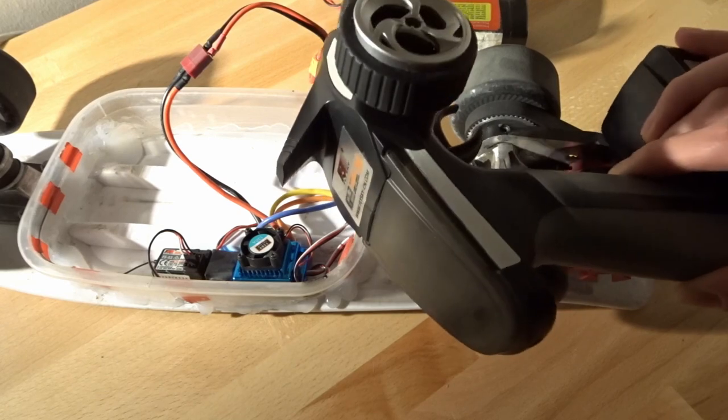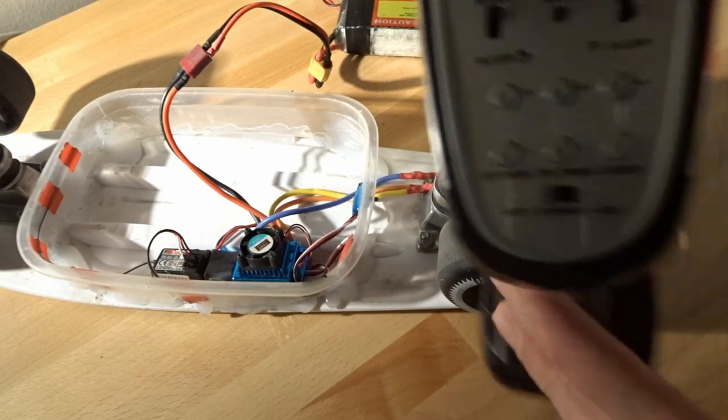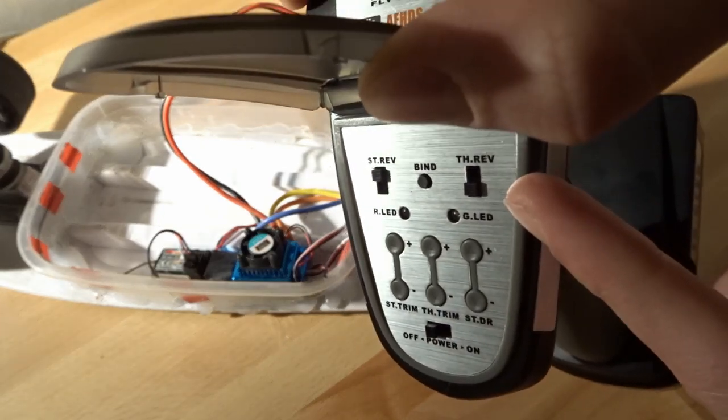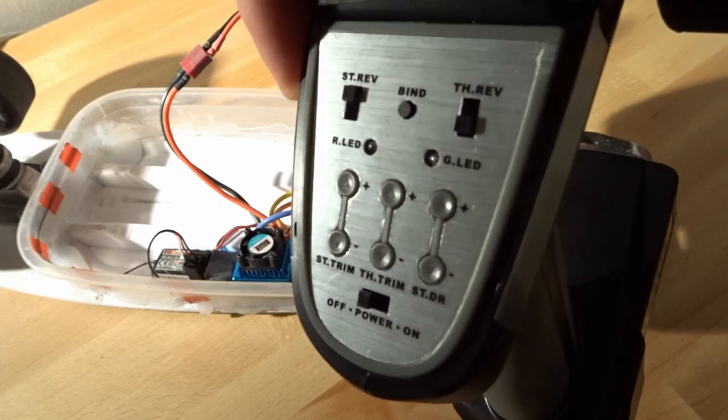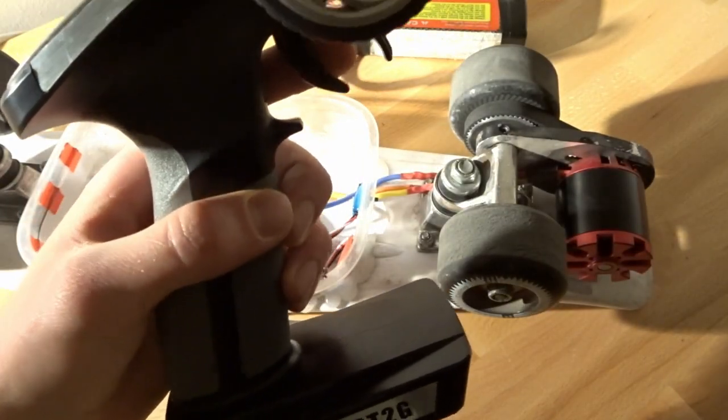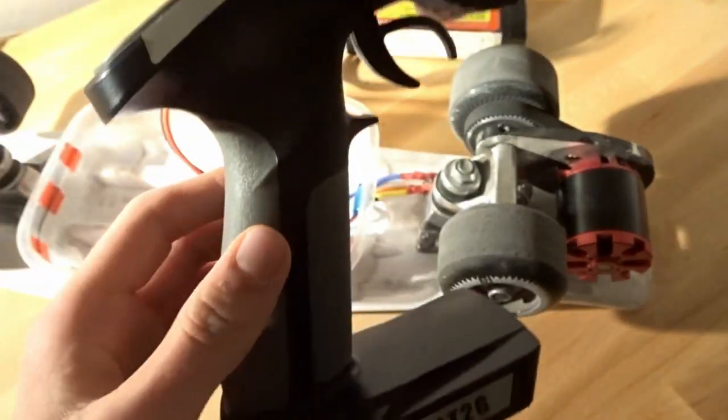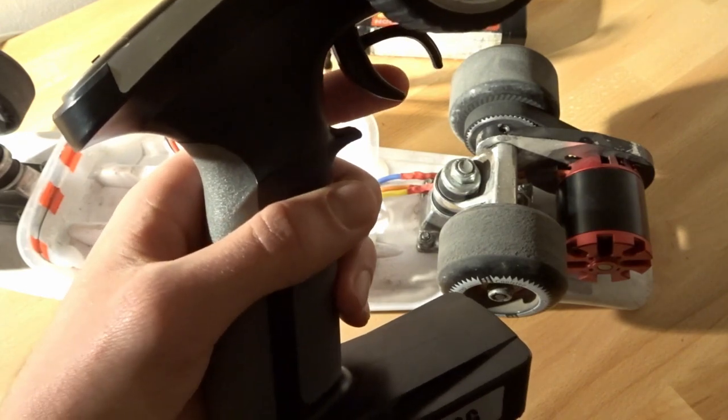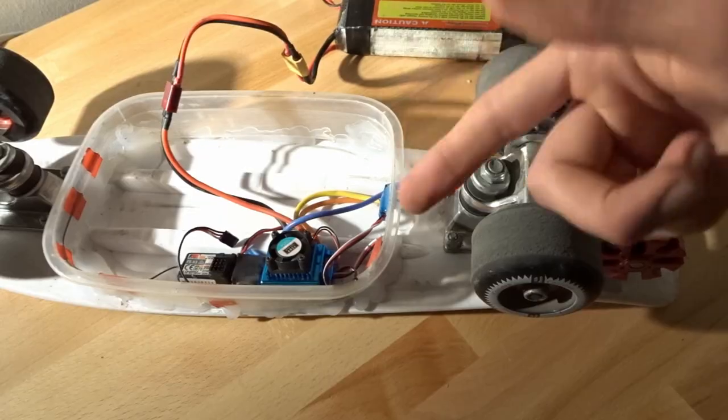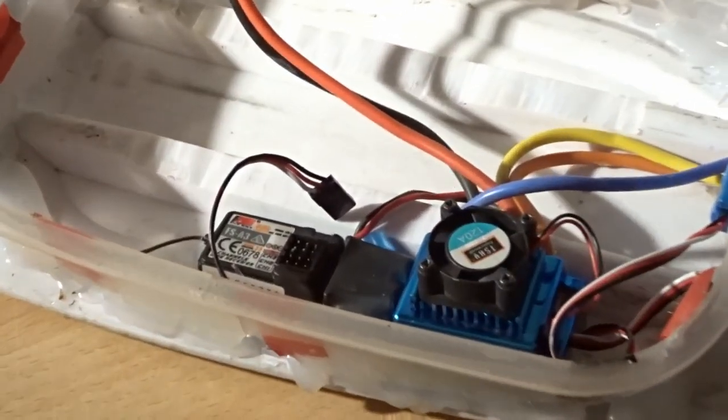But since you got this transmitter, you have a pretty cool switch here which says throttle reverse. So if you notice that when you give positive throttle like this your skateboard goes backwards, you just flip the switch and your board is supposed to go forward if you give positive throttle.